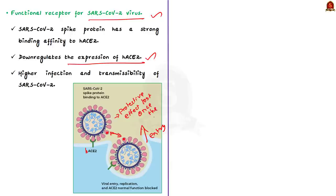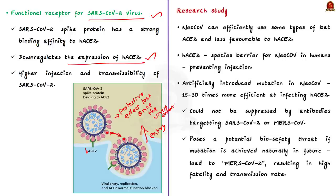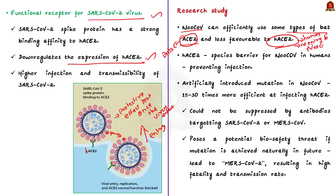When SARS-CoV-2 binds to hACE2, it downregulates the expression of hACE2, making it unable to protect from severe acute lung injury — resulting in higher infection and transmissibility. Now, research on NeoCov found that NeoCov can efficiently use some types of bat ACE2 for entry. However, human ACE2 is less favorable for NeoCov's entry — it is unable to bind with hACE2. So as of now, there is a species barrier for NeoCov in humans, which is preventing human infection. This is a good thing.